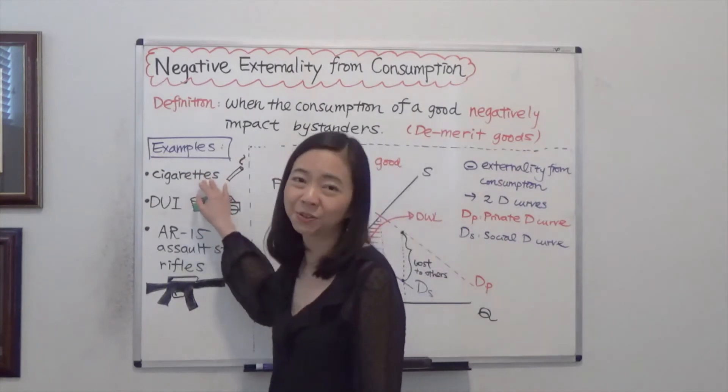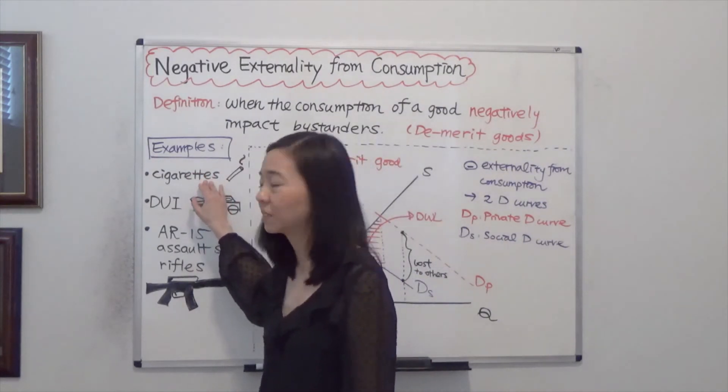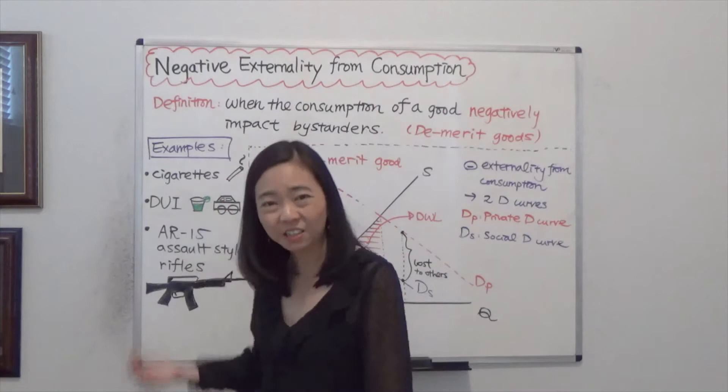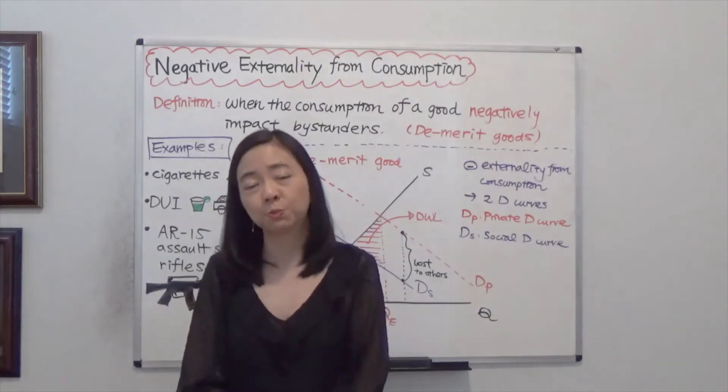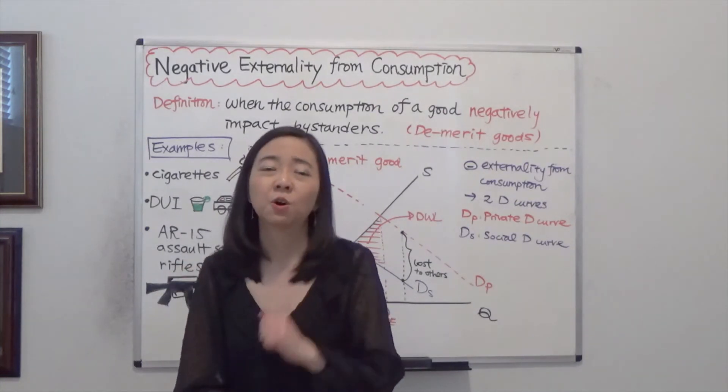For example, tax on cigarettes so you smoke less. Or we just make it illegal, or we prohibit smoking in a movie theater or in the airplane.